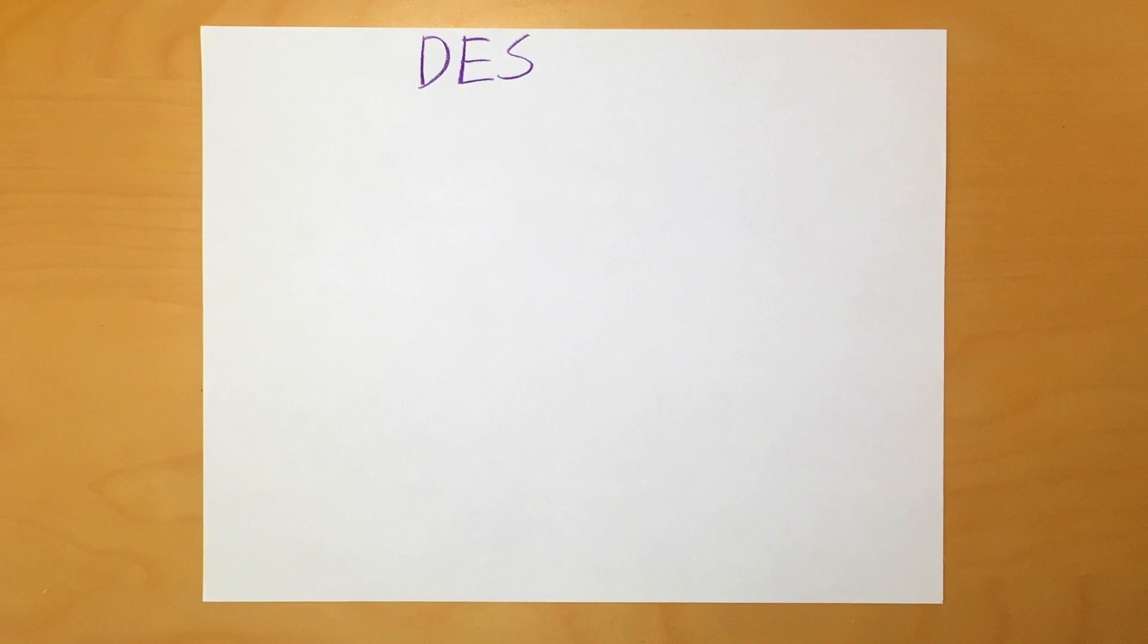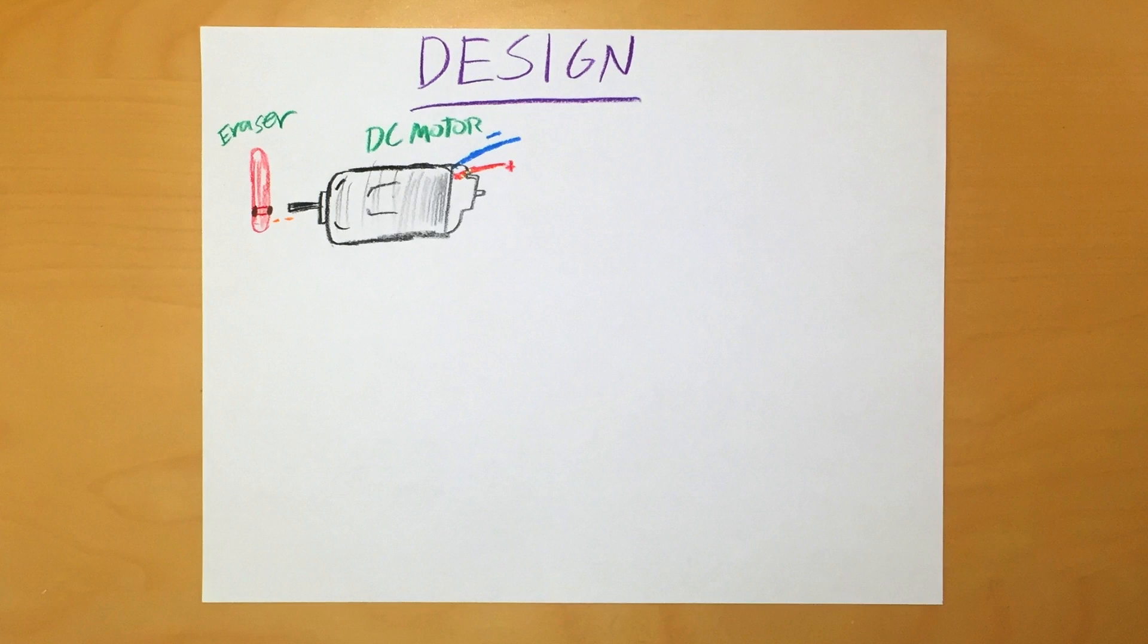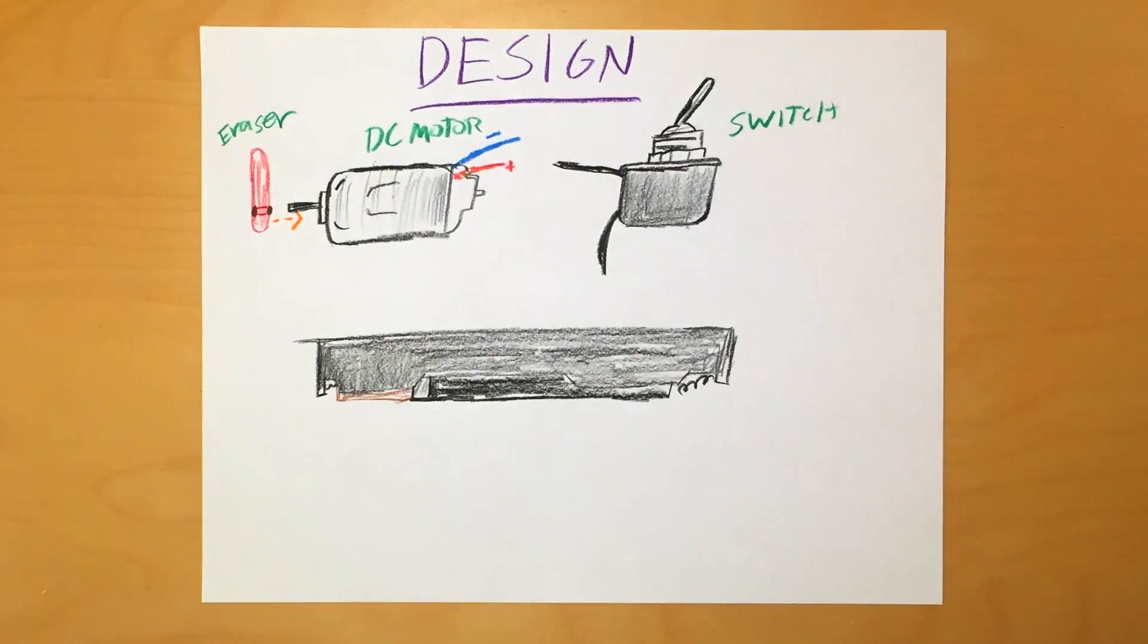Now let's get into the design side of the Jitterbot. The eraser is attached to the shaft of the motor. Both the motor and the switch will rest on top of the battery case, secured by hot glue. The switch may have to be sideways to fit.